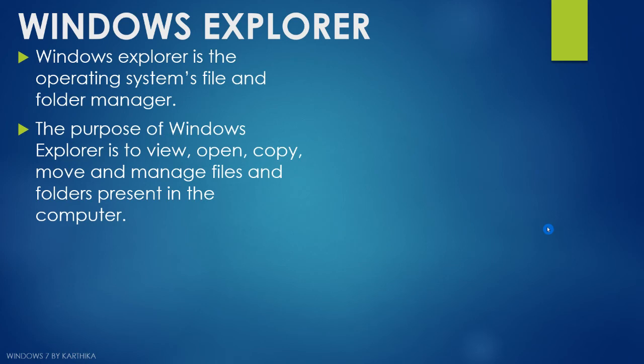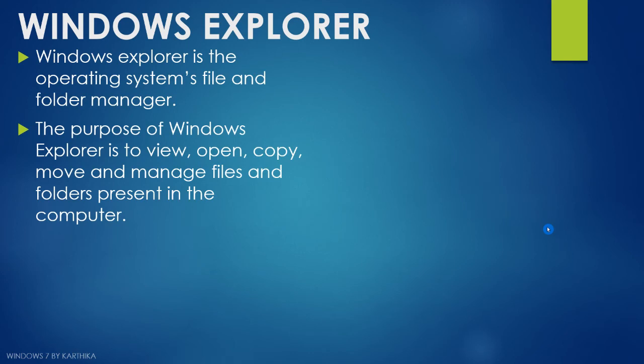To access Windows Explorer, you can use several ways. One is to double-click on the My Computer icon on the desktop. The second way is to press the Windows key and the E key on the keyboard together. The third way is to go to the start menu and click on My Computer. The fourth way is the Windows Explorer icon in the taskbar.